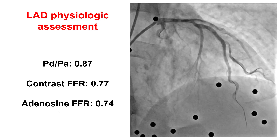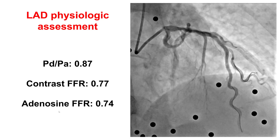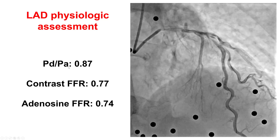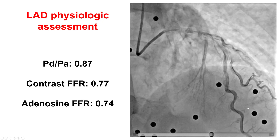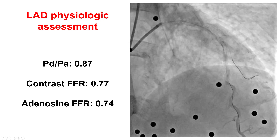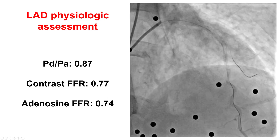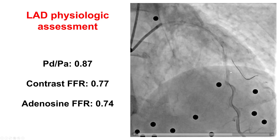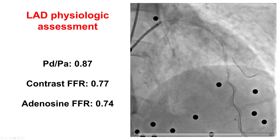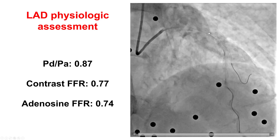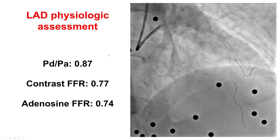We thought we were done, but there was this intermediate lesion in the proximal LAD and we wanted to make sure we didn't miss anything. We performed coronary physiology — the resting gradient Pd/Pa was 0.87, less than the 0.91 cutoff. We then did contrast FFR, which is the same as FFR but using contrast instead of adenosine, with a cutoff of 0.83, and we were ischemic based on that. This was confirmed with intracoronary adenosine. The step-up was proximal to the mid-LAD stent, showing that despite no significant-appearing disease geographically, coronary physiology revealed significant ischemia due to a proximal LAD lesion.